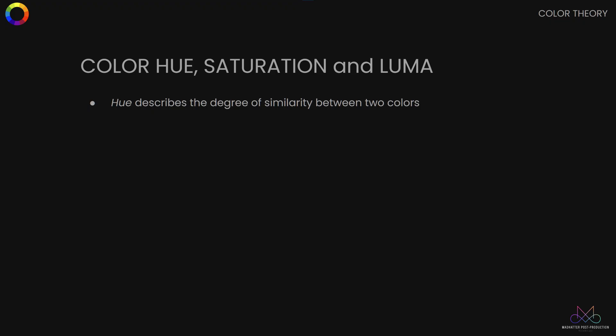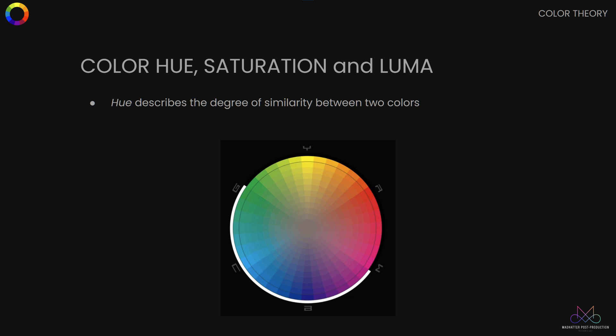Hue is what we define as colour in our everyday life — so for example red, blue, or magenta. Hue on its own is a relative concept, as technically it is the degree of difference between two colours. If you imagine taking all the colours and putting them into a circle, looking at the difference in hue means looking at the degrees of difference between them. In everyday life we still do that when you say this red is more orangey or slightly more pinkish — that's what we're referring to. Hue allows us to be more technical in how we describe colour.